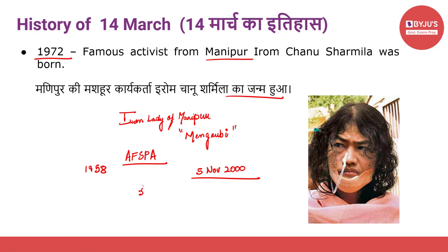Just three days after she began her fast, she was arrested by police and charged with an attempt to commit suicide, which was unlawful under the Indian Penal Code at that time. She continued her hunger strike for not one, not two, but sixteen years, ending her fast on 9th August 2016. Having refused food and water for more than 500 weeks, she was nasally force-fed in jail. She has been called the world's longest hunger striker.